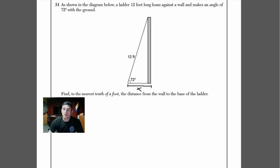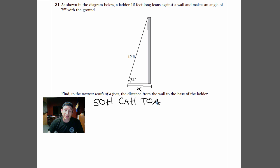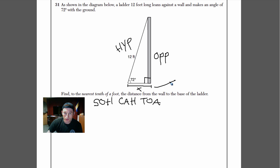Something I like to do is write down my trig functions here because we've got a right triangle, so we'll be doing trigonometry. I'm going to write down SOH-CAH-TOA and then label my sides of the triangle. Opposite the 72 degrees is the wall, so that's opposite. There's the hypotenuse — that's opposite the 90 degrees. And the one we're looking for is the adjacent side.